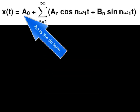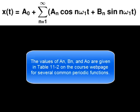AO is the DC term. The values of AN, BN, and AO are given in Table 11-2 on the course webpage for several common periodic functions.